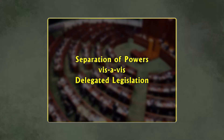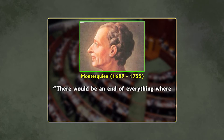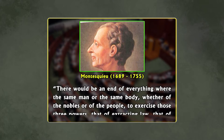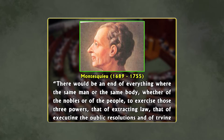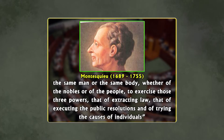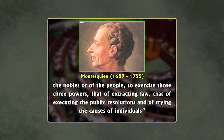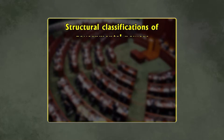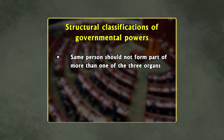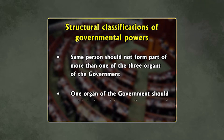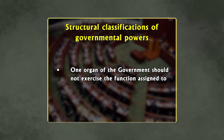Number 2: Separation of powers vis-à-vis delegated legislation. During the middle of the 18th century, Montesquieu said: 'There would be an end of everything where the same man or the same body, whether of the nobles or of the people, were to exercise those three powers — that of enacting laws, that of executing the public resolutions, and of trying the causes of individuals.' The theory of separation of powers signifies three formulations of structural classification of governmental powers.